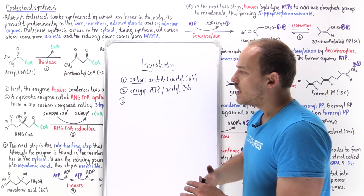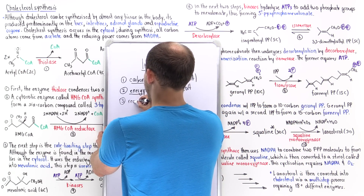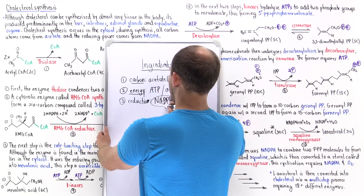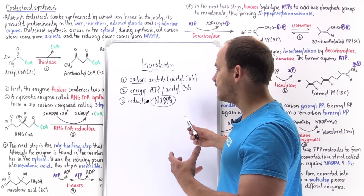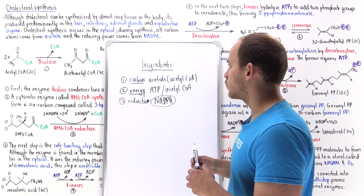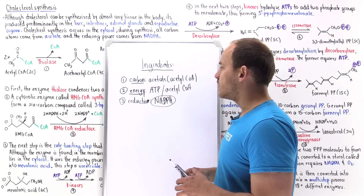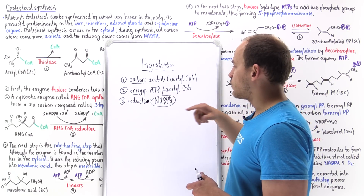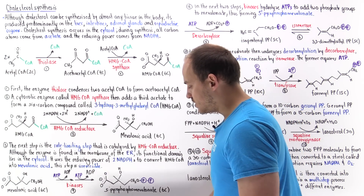We also need reducing power. Many of these reactions are oxidation-reduction reactions, so we need a source of electrons. The reducing power — the electrons — actually come from NADPH. We use the pentose phosphate pathway in the cells to help synthesize NADPH, and this NADPH is important for synthesizing cholesterol. If we don't have any NADPH in the cell, we can't build any cholesterol. So three major ingredients: carbon from acetyl-CoA, energy from ATP or acetyl-CoA, and reducing power from NADPH.